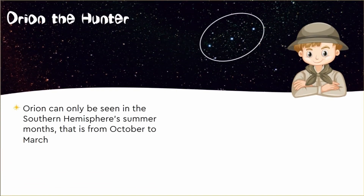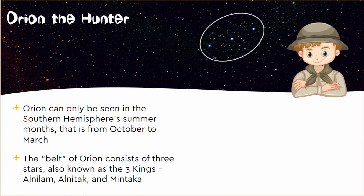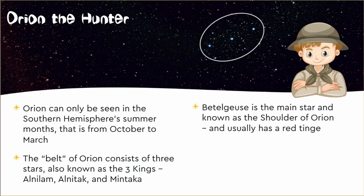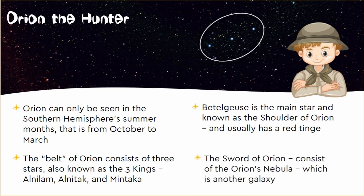The next constellation is Orion the Hunter. Orion can only be seen in the summer months, from October through to March. The belt of Orion consists of three stars, also known as the three kings. They are called Alnilam, Alnitak, and Mintaka. Betelgeuse is the main star in this constellation and is known as the shoulder of Orion. It usually has a red tinge. The sword of Orion consists of Orion's Nebula, which is actually another galaxy just like our Milky Way.